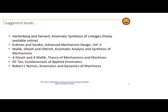Erdmann and Sander is also a very good book for analytical synthesis; the analytical synthesis portions will come from Erdmann and Sander Volume 2, which is Advanced Mechanism Design. Malik, Ghosh and Dittrich also has a very good treatment of synthesis of mechanisms and some advanced analysis. DC Tao is another older book with nice examples and fundamentals of kinematics. All other books are available in the library, other than Hartenberg and Denevit which you will access on Moodle.